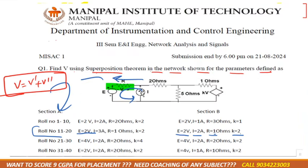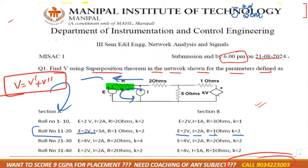These are your assignment questions. If you have any doubt, you can contact me. My name is Charujan and this is my number - I will help you with any doubts or queries. This assignment must be submitted by 6 PM on 21st August. The subject is Network Analysis and Signals, Semester 3, Electronics and Instrumentation Communication Department.